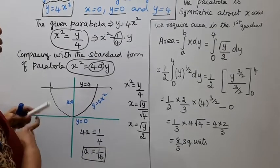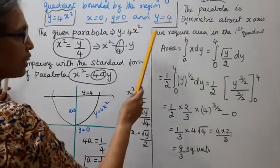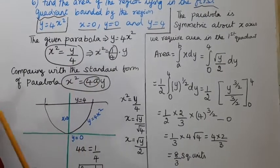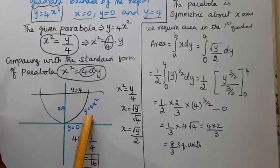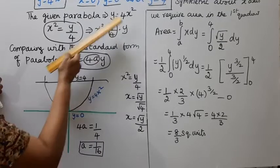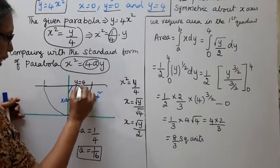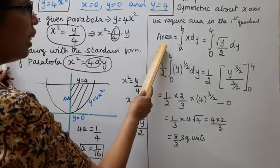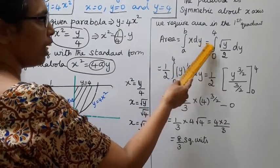This parabola is symmetric about the y-axis. With y equal to 0, the area is set up as an integration.